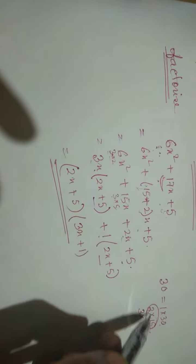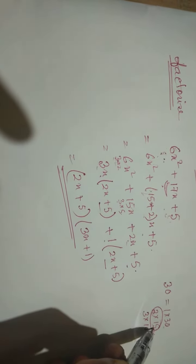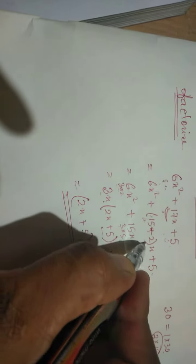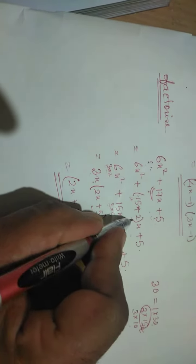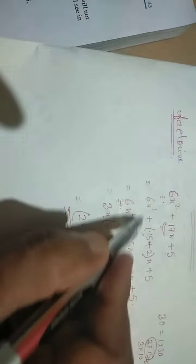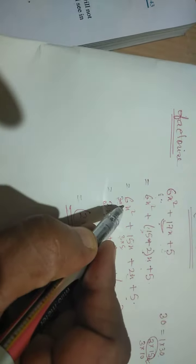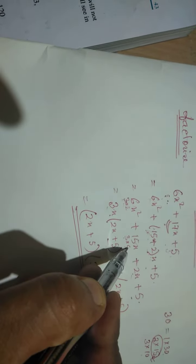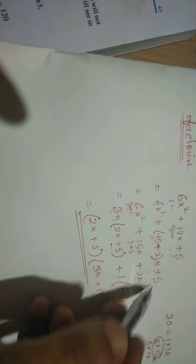Which to give the 17? That 2 and 15 will give the 17. So we write like that: 15 plus 2. Here 15 plus 2 because it is 17x, and we break it: 6x square, 15x, 2x, and 5.